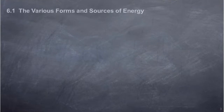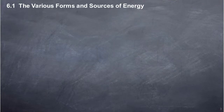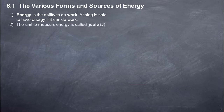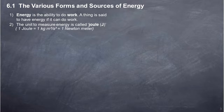6.1: The Various Forms and Sources of Energy. Energy is the ability to do work. A thing is said to have energy if it can do work. The unit to measure energy is called Joule (J). 1 Joule equals 1 kilogram meter squared per second squared, equals 1 newton meter.